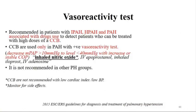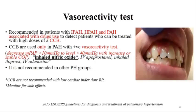Regarding vasoreactivity testing, very rarely do patients end up on calcium channel blockers—only 5-10% are vasoreactive. We use inhaled nitric oxide. To be positive, you need a decrease in pressure to less than 40 mmHg by more than 10 points with preserved cardiac output. We only consider vasoreactivity testing in three specific subgroups of PH. Even if vasoreactive, very low cardiac output, bradycardia, or low blood pressure are contraindications to calcium channel blockers as they may precipitate right-sided heart failure. Our only patient on a calcium channel blocker—amlodipine 30 mg daily—developed gingival hyperplasia and we had to stop it.